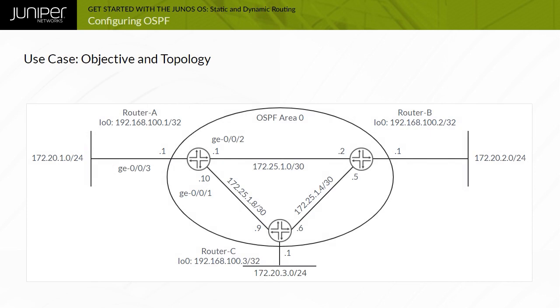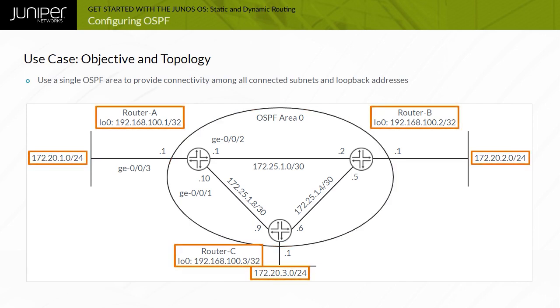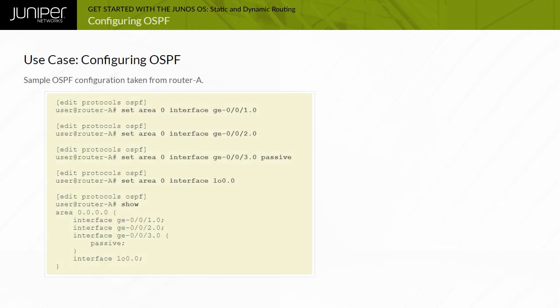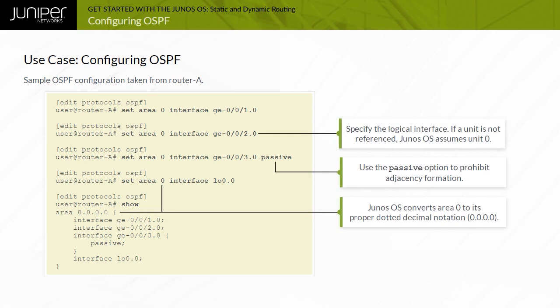This use case illustrates how OSPF works using the displayed topology. The objective is to use a single OSPF area to provide connectivity among all connected subnets and loopback addresses, and to ensure that no adjacencies are formed on interfaces connecting to the 172.20.x.0/24 subnets. The OSPF configuration required for router A is displayed; routers B and C require a similar configuration to establish adjacencies and share routing information.